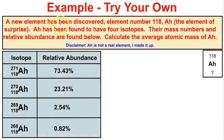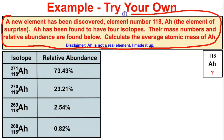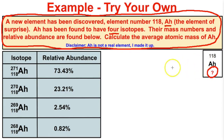You're going to try this on your own. I recommend that you pause this video and try this before I do it for you. Get your calculators out. It says right here: a new element has been discovered — element number 118 — the element of surprise. "Ah" has been found to have four different isotopes. Their mass numbers and relative abundance are found below. We want to calculate the average atomic mass of Ah. What we need to do is take the masses of each isotope, multiply by their relative abundance, and add those together — and that will give us the number that appears on the periodic table.